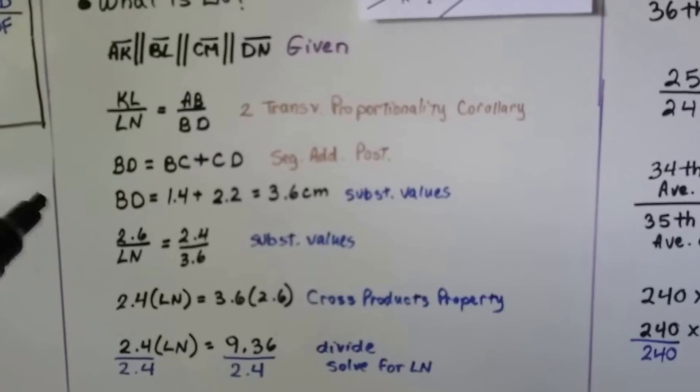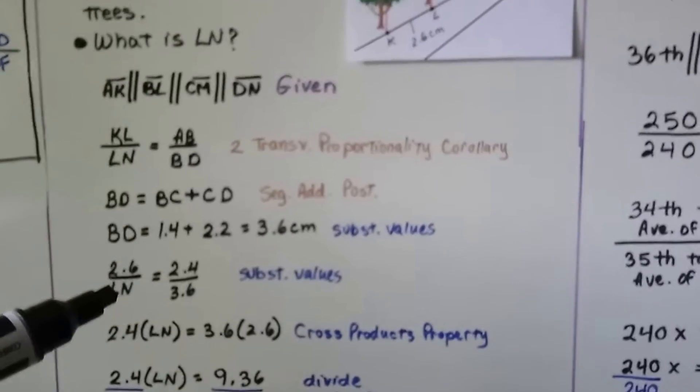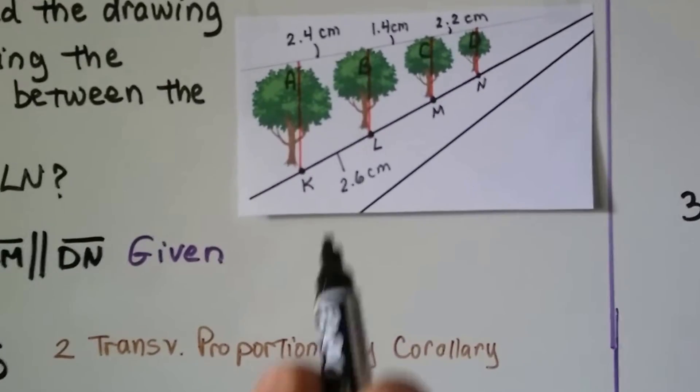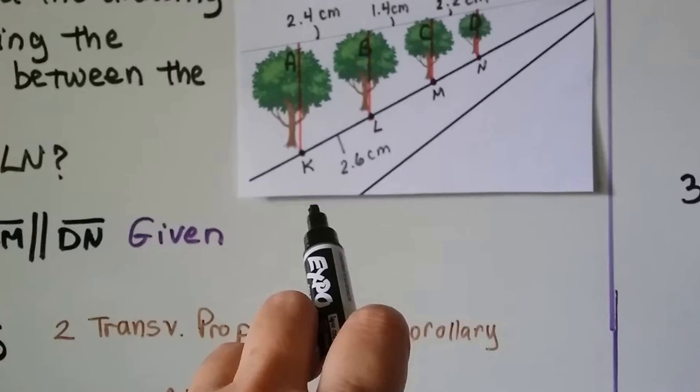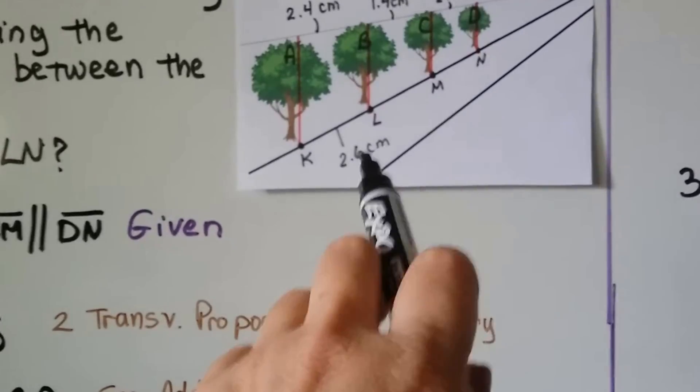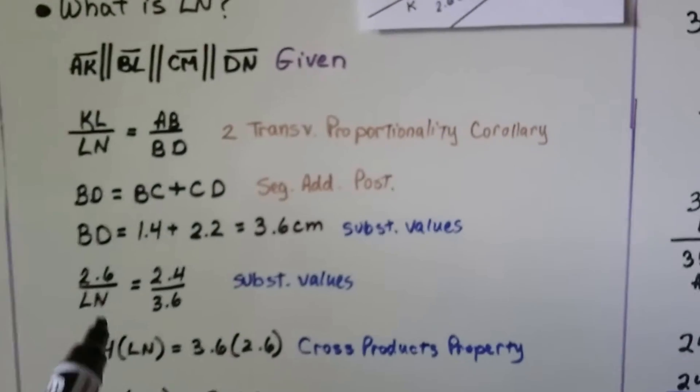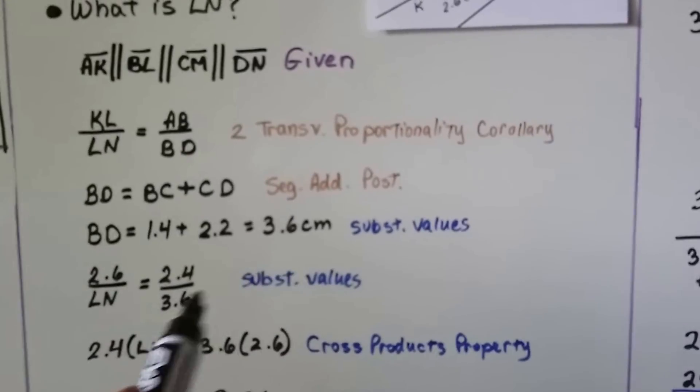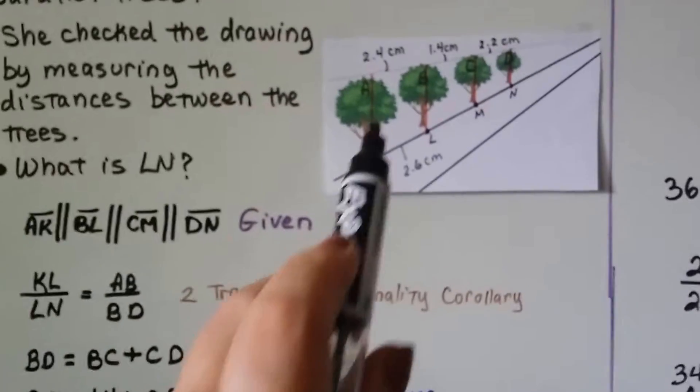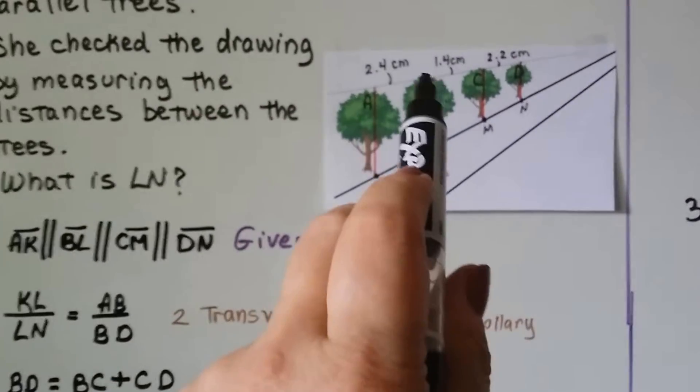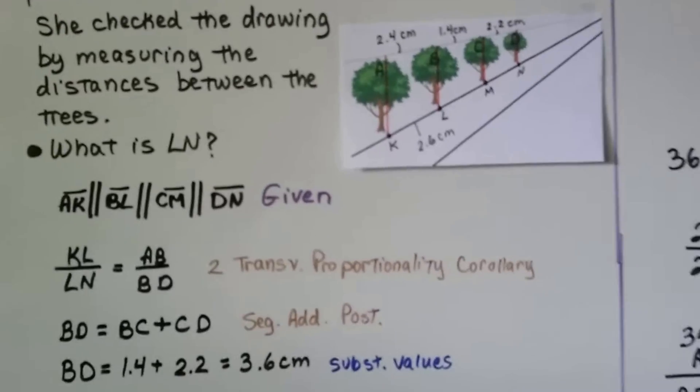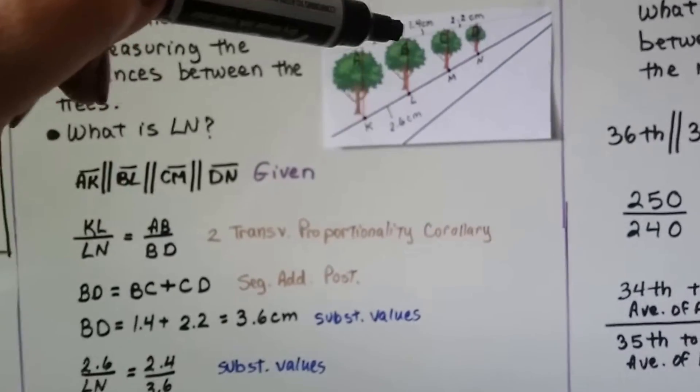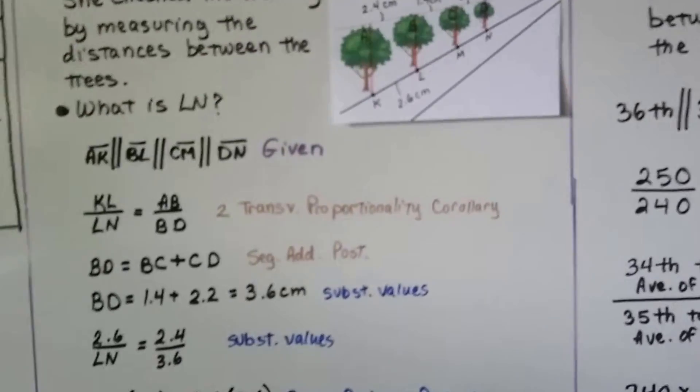And we can write 2.6, which is the KL, right here. So we have 2.6, and that's going to be over the LN. Then we're going to have 2.4 over the 3.6 we just found. So AB, right here, is 2.4, and it's going to be over this total of 3.6, because this part corresponds to this part, and this length corresponds to LN.